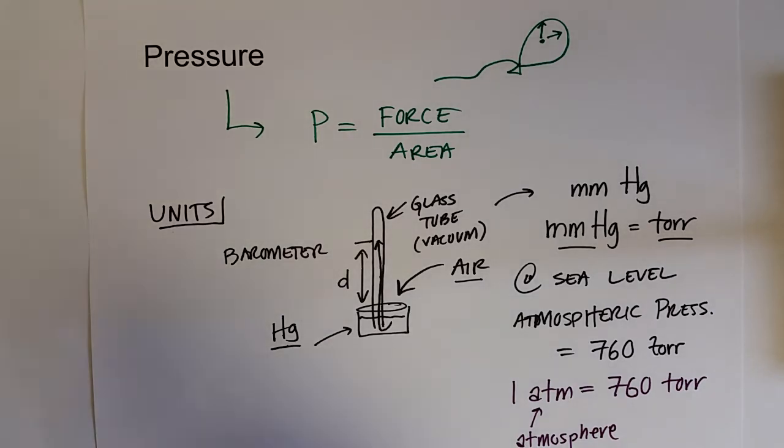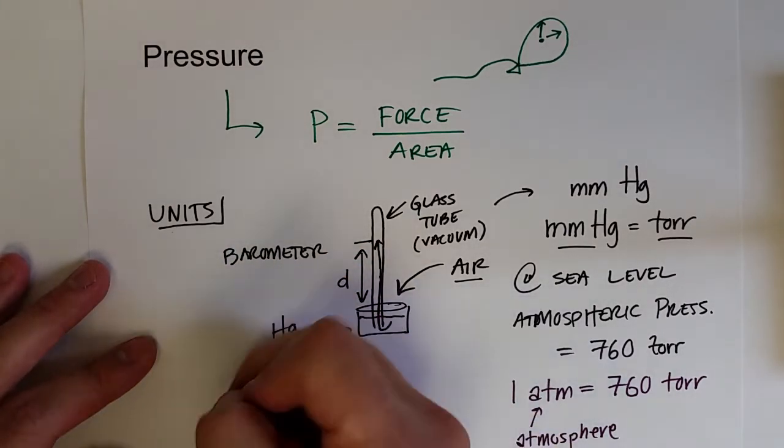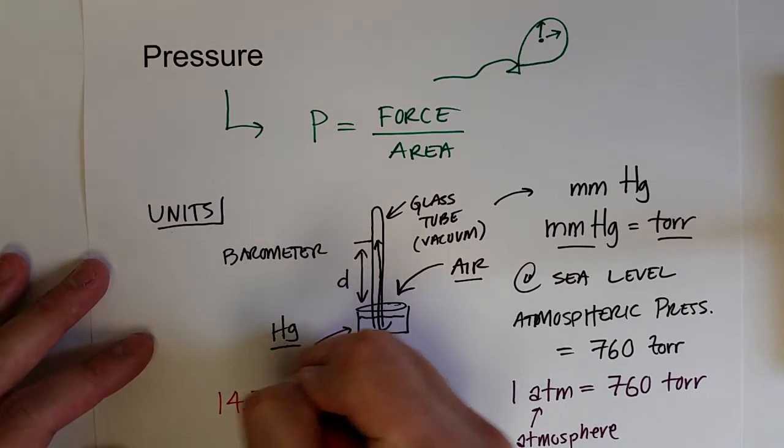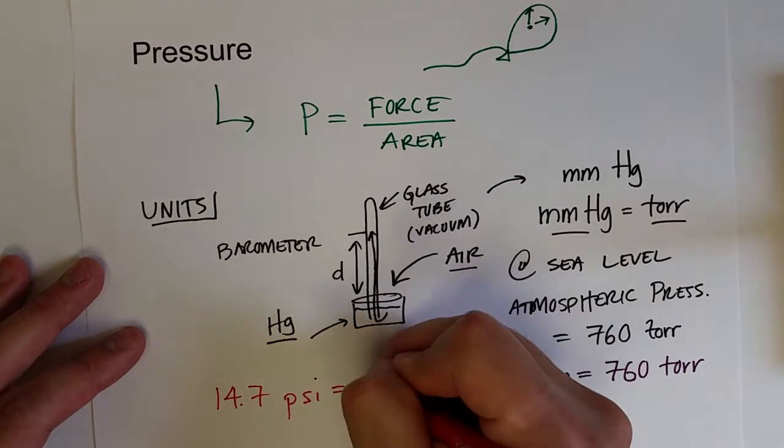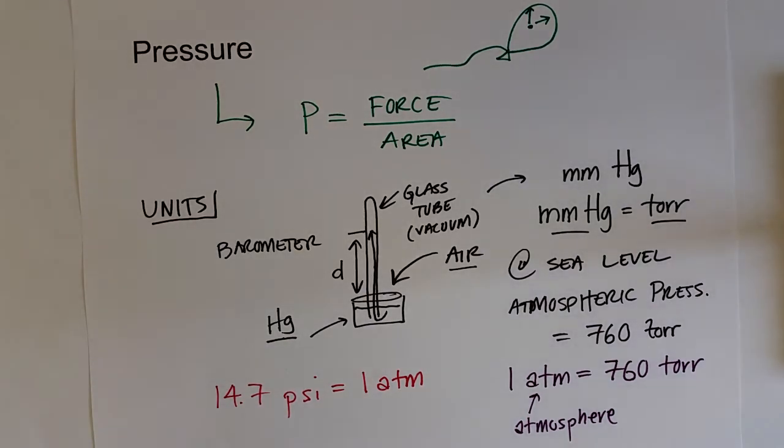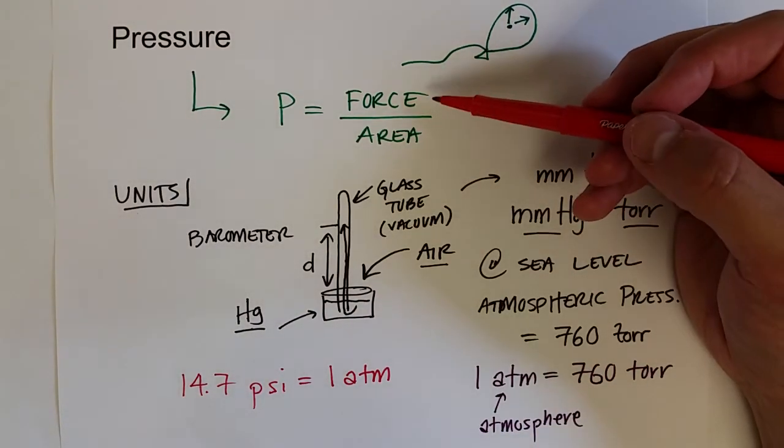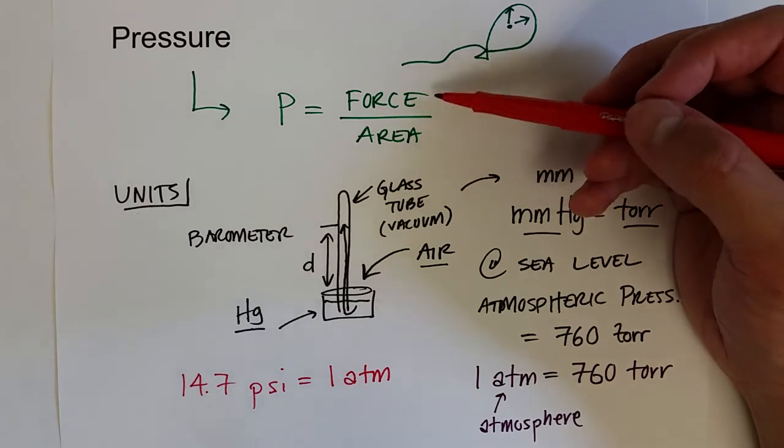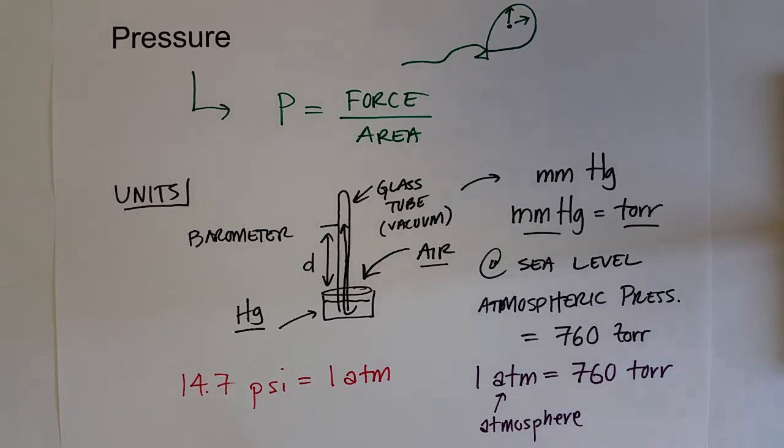Other units that you might see are PSI, pounds per square inch. 14.7 PSI, pounds per square inch, is equal to one atmosphere. The last time you inflated either bike tires or car tires, you inflated it to a certain PSI level, pounds per square inch. That is also a unit of pressure. That really boils down to the calculation for pressure: pounds is the unit of force, square inches is the area, so pounds per square inch is the pressure.